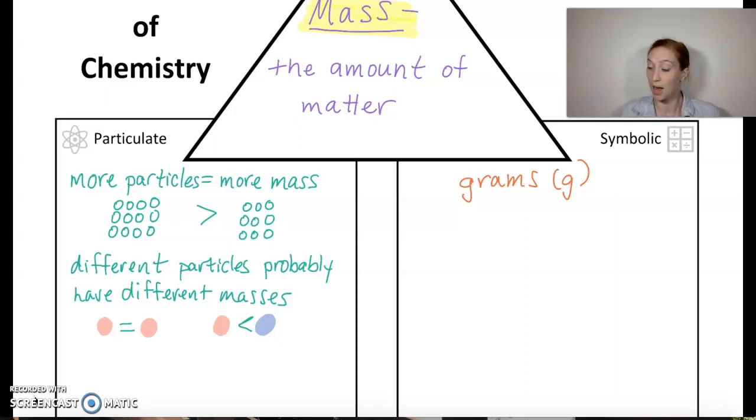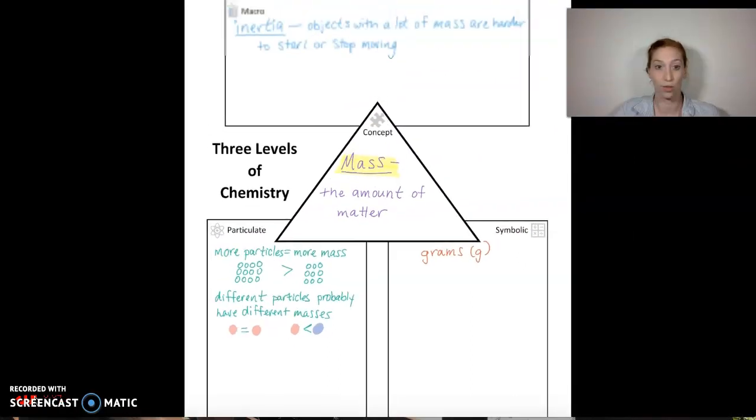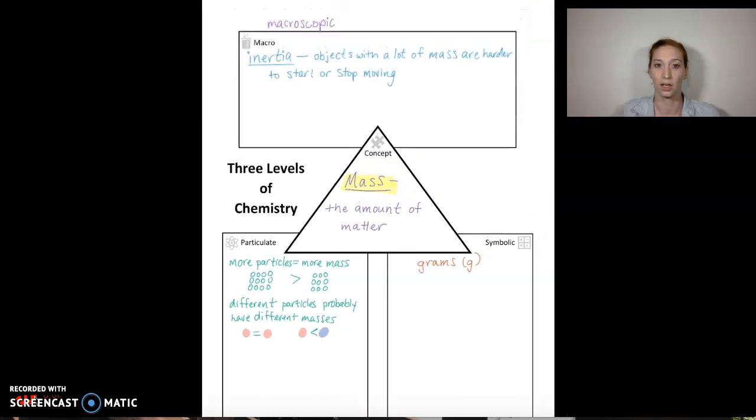So quick snapshot of our first three levels diagram. We've got a little bit of something in each of our boxes: macroscopic, particulate, and symbolic. And again, as we learn more and we gain more knowledge, we're going to come back to this document and add some more stuff to it.